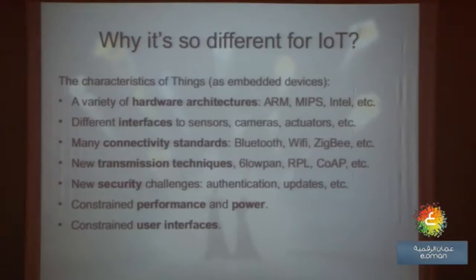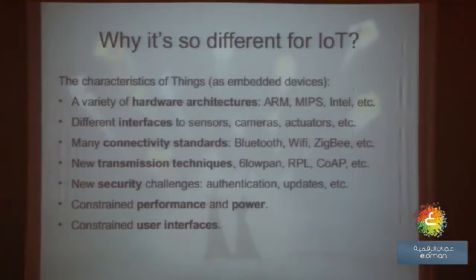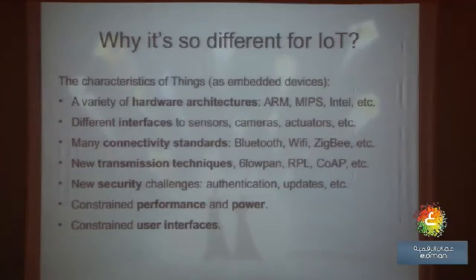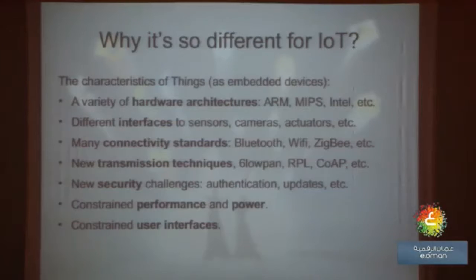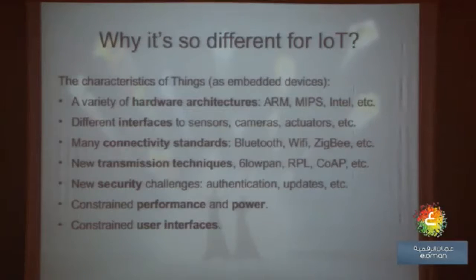So what is so different for IoT? Because if system software is the same as operating system, we already know what an operating system is and we are already using it. The main difference for IoT systems is we have a variety of hardware architectures like ARM, MIPS, Intel, and so on. We have many different interfaces to sensors, cameras, actuators, and others. We have many connectivity standards such as Bluetooth, Wi-Fi, ZigBee, and others. We have new transmission techniques like LoFan, RPL, CoAP, and others. We have new security challenges like authentications and over-the-air updates. We also have constrained performance and power — many IoT devices should work on batteries for years. And they have very limited user interfaces; you usually do not see any graphical interfaces on many embedded systems, maybe a few push buttons and that's it.